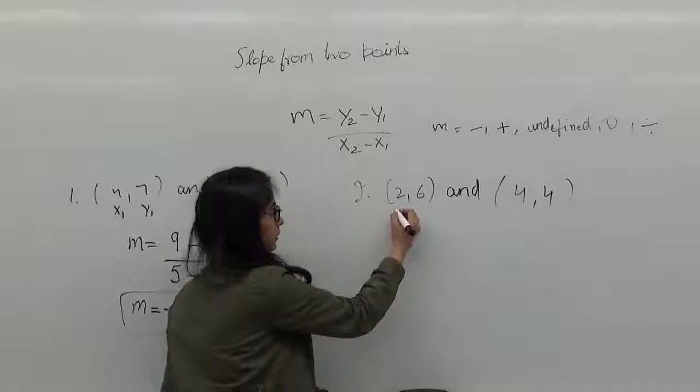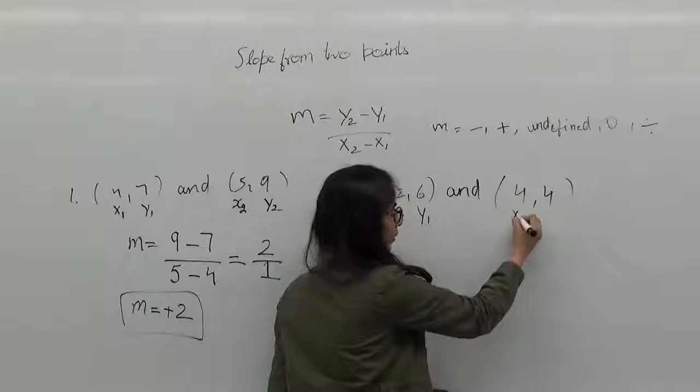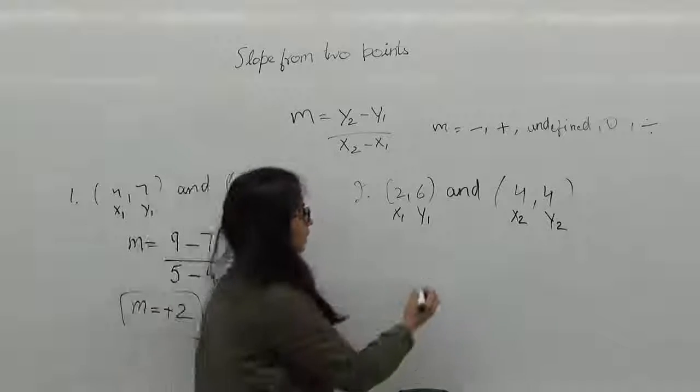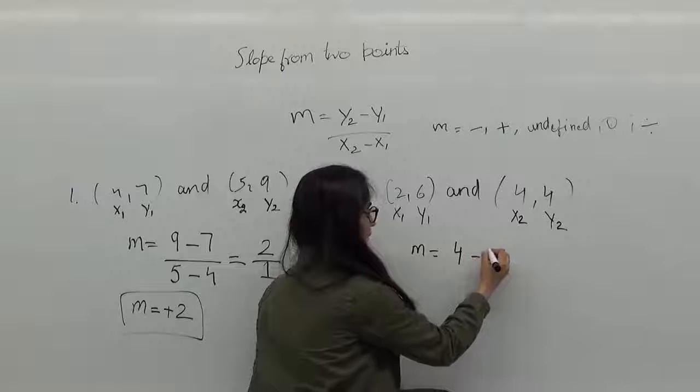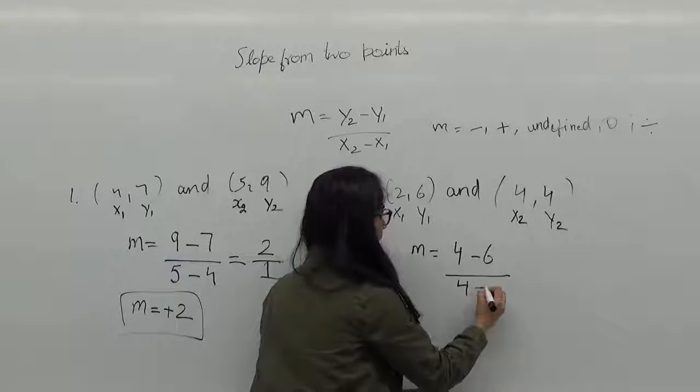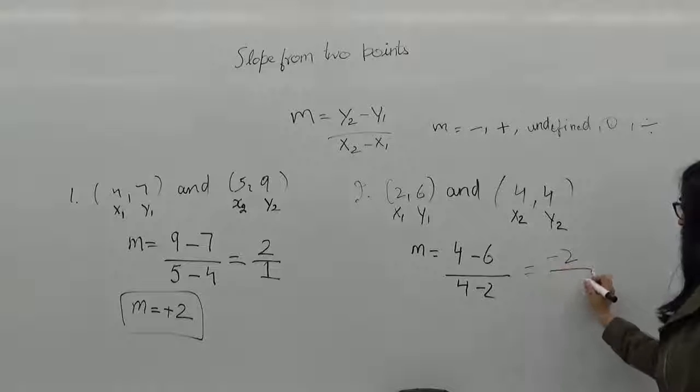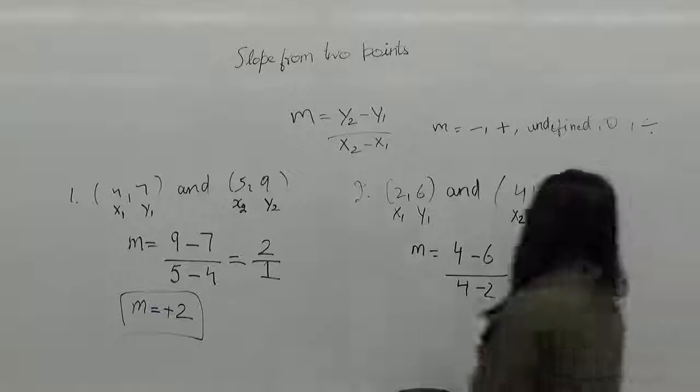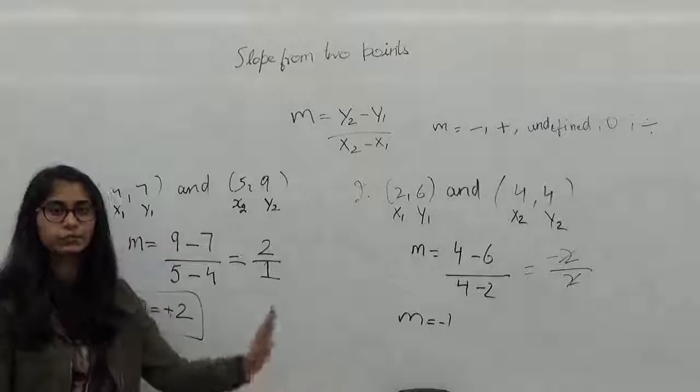So my x1 here is 2, y1 is 6, x2 is 4 and y2 is 4 as well. So we just apply the formula and we get y2 as 4 minus y1 which is 6 over x2, 4 minus x1 which is 2. So I get minus 2 over 2. Now I just cancel the 2 out. So my slope here is negative 1, which is negative slope.